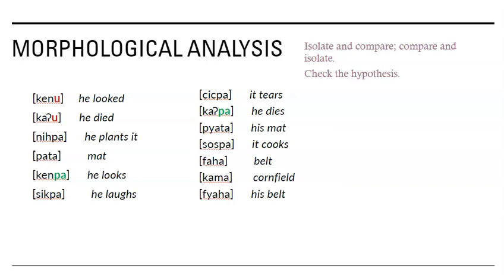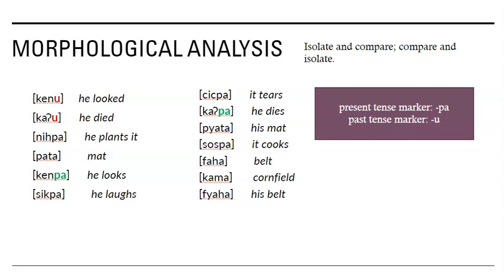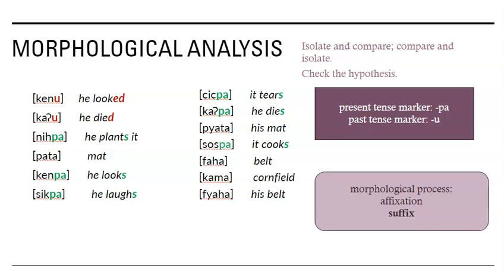When we compare 'he looked', it ends in 'oo', and when the verb means 'he looks', it ends in 'pa'. The 'ken' is the same — the only difference is that suffix. So it looks like we have figured out the pattern. We compared 'he looked' with 'he looks', and 'he died' with 'he dies', and we see that pattern. But we always have to check the data — let's make sure the pattern is consistent. Linguistics is about consistency. When we check through, we can see that 'he laughs' ends in 'pa', 'it tears', 'it cooks' — the pattern is consistent. Again, this is affixation, and it's a suffix.